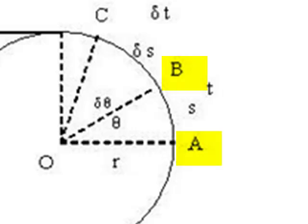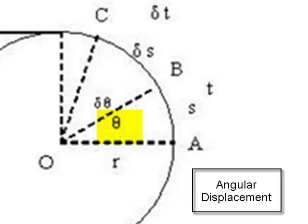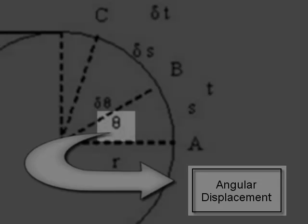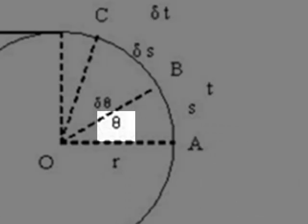When the body moves from A to B, it inscribes arc S in time T and subtends angle theta at O. The angle subtended by the position vector or radius vector in the given time at the center of the circular path or at the origin of the coordinate system is called angular displacement. So, theta is the angular displacement in time T.